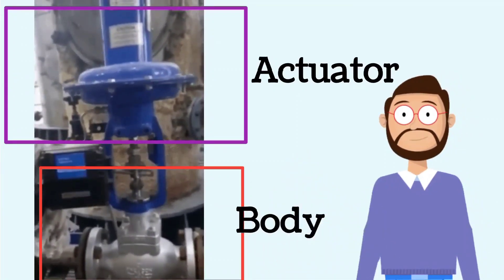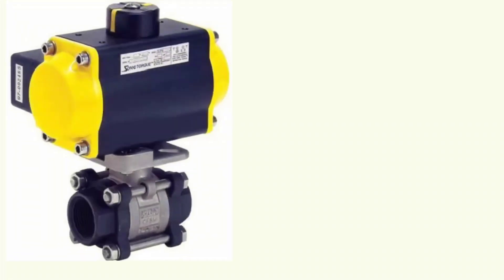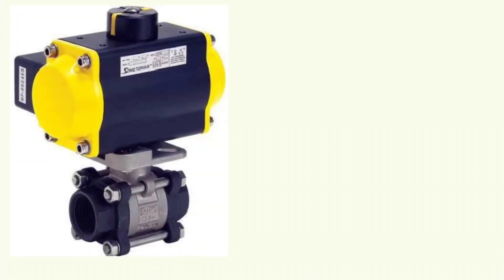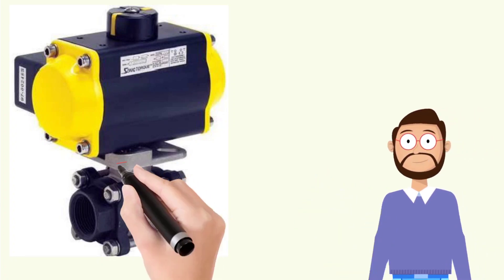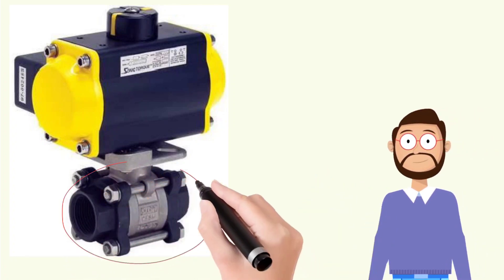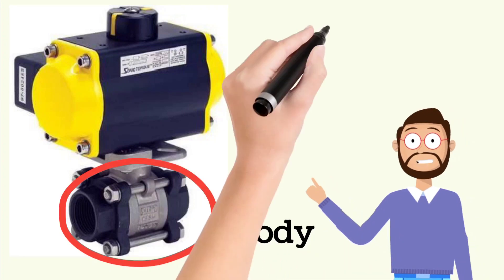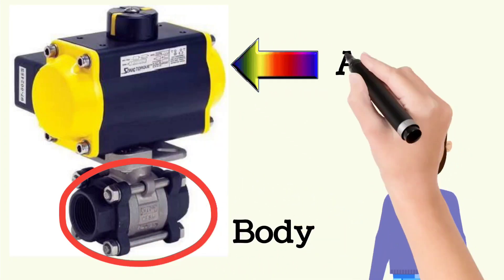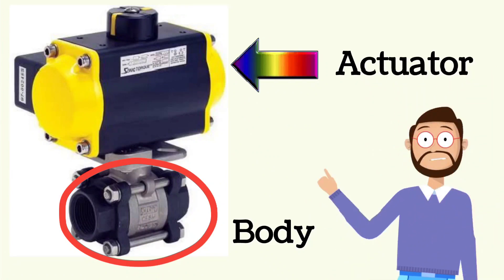Now let us understand the ball valve. The circle shown represents the valve body, through which the fluid flow will pass. The arrow shown above indicates the actuator, which will operate the valve.